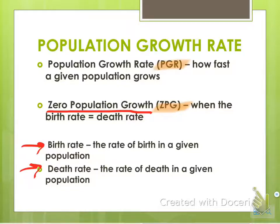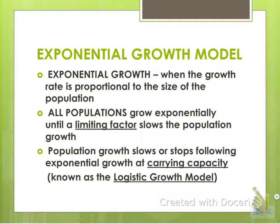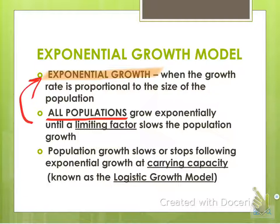The exponential growth model is when the growth rate is proportional to the population size — a key vocab term to define. All populations grow exponentially until they hit a limiting factor, which then slows population growth. Something like a natural disaster or the introduction of a new predator will change the population growth.